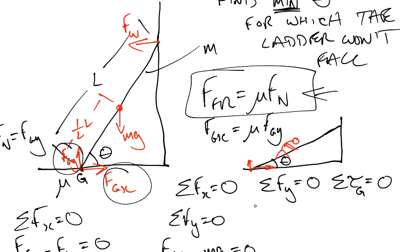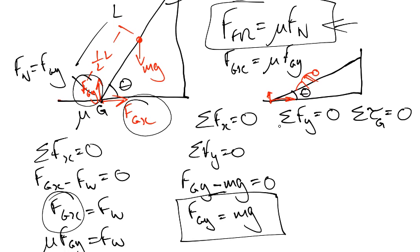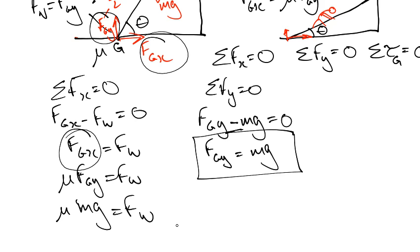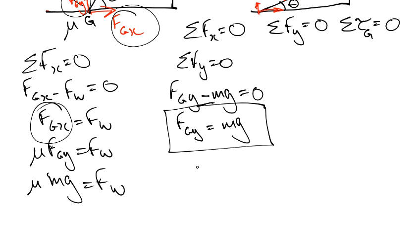However, I still don't have anything to do with theta. So let's take the sum of the moments about point A and see where that gets us. FGX equals FW, and FGX equals the force of friction, which is μFGY. And since FGY equals MG, μMG equals FW. Correct.